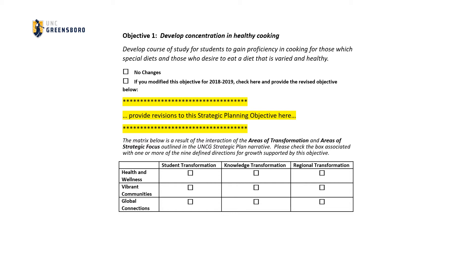Next, we find the strategic objectives section. In this section, the strategic objectives for the program are listed. Each objective is followed by an associated measure and target used to illustrate the program's results in achieving the objective. One major difference from the SLO section is the addition of a matrix directly under each objective. This matrix contains nine checkboxes related to the areas of transformation and areas of strategic focus outlined in the UNCG strategic plan. You may check any number from zero to all nine of the checkboxes depending on what parts of the UNCG strategic plan this particular objective supports.